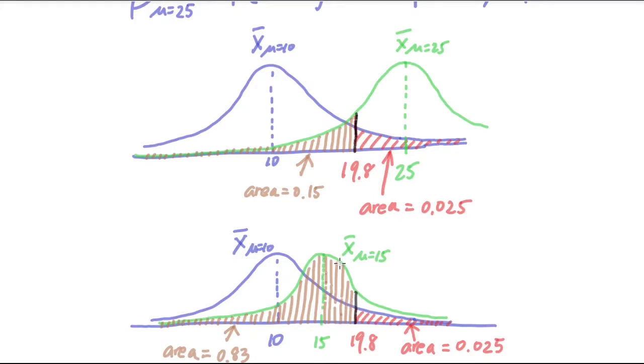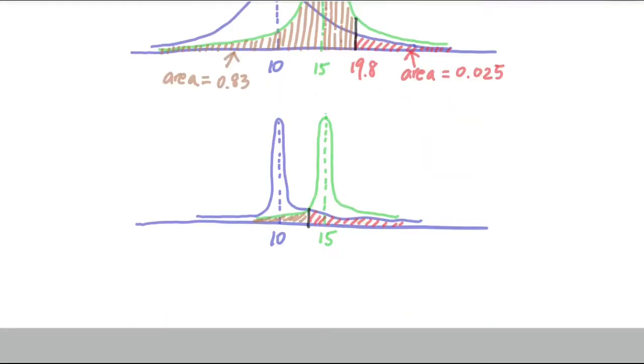And if you want to reduce both alpha and beta, what you want to do is actually collect more data points by increasing the sample size so that both the purple distribution and the green distribution can both be much more narrow, meaning all the probability are concentrating around each of their own mean, then both the alpha and beta would be very small. Thank you.